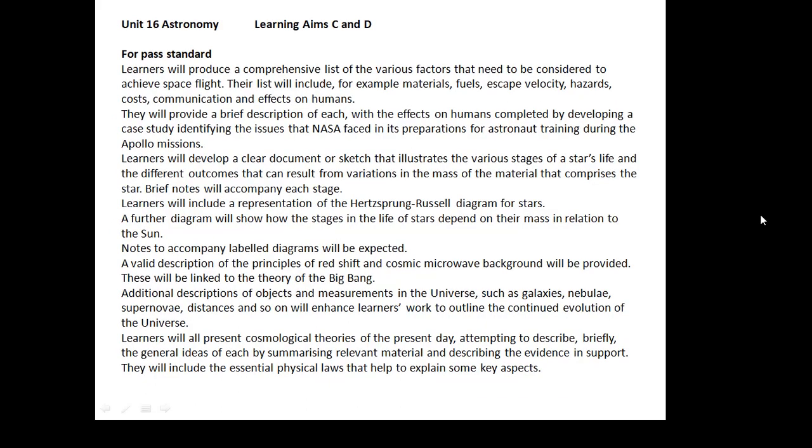Now, let's look at an example. This is unit 16 astronomy, and it's for learning aims C and D. There's A, there's B, and the C and D together. And this is just for pass standard. This is learning aim C and D for pass standard. Never mind merit and distinction. This is just for a pass. And when you look at this, you think, that's a mountain.